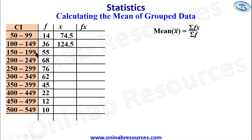100 plus 149 divided by 2 gives 124.5. We still remind you that we are adding the lower class interval plus the upper class interval and then divide by 2. So we continue: 150 plus 199 divided by 2 gives 174.5, 200 plus 249 divided by 2 gives 224.5.